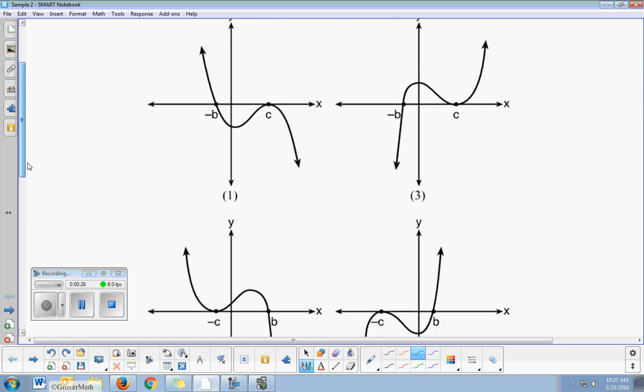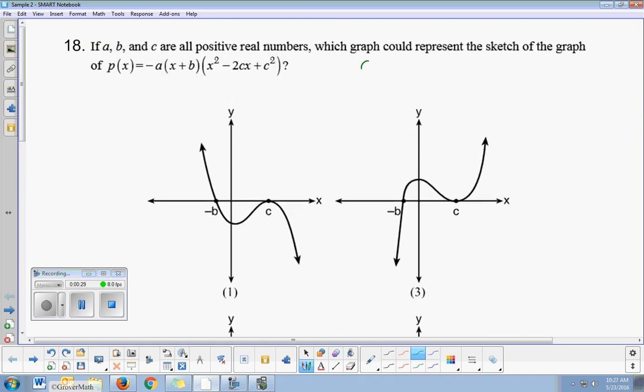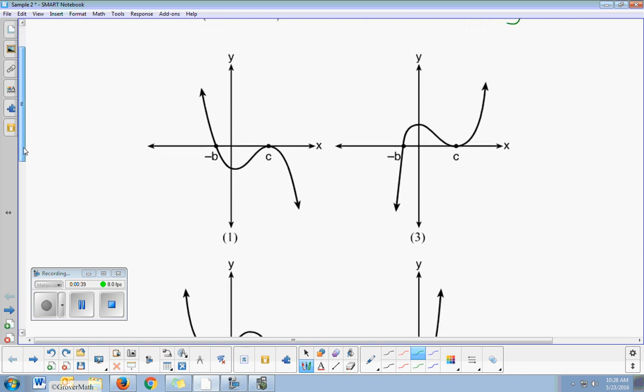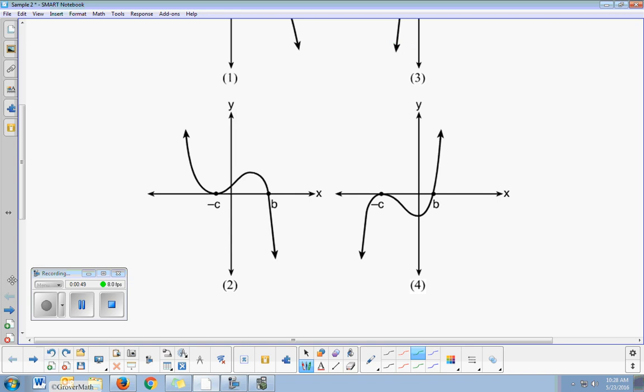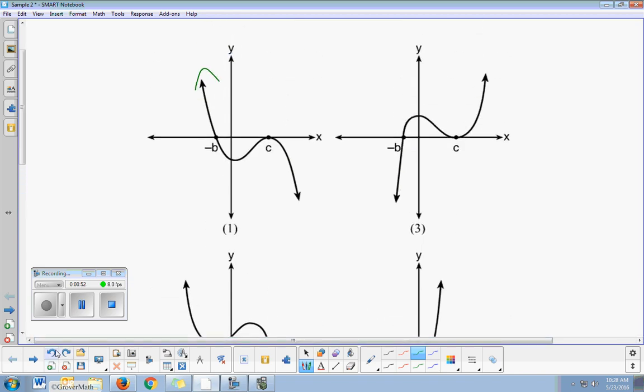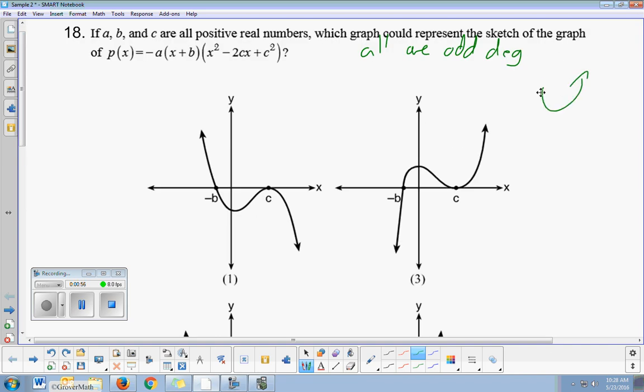A couple of things to note here. Notice that all four of these are odd degree. And how can we determine that? The way we determine even or odd degree is if the arrows are pointing in the same direction or opposite direction. See how one's pointing up, one's pointing down. So these are all odd degree functions because they're pointing in opposite directions. Even degree functions are either both pointing up or both pointing down. And I see that as the case here because I have X to the first and X to the second there, so this is actually a degree 3 graph.